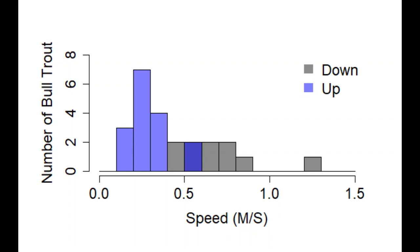We observed upstream migrating bull trout swimming through the video weir slower compared to the downstream migrants. Seven upstream bull trout swam through the weir at 0.3 meters per second. We had one downstream bull trout swim through the weir at 1.3 meters per second. We observed bull trout swim downstream through the video weir head first as well as tail first.